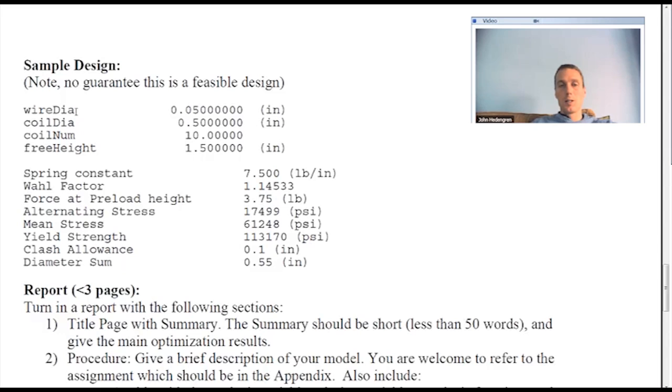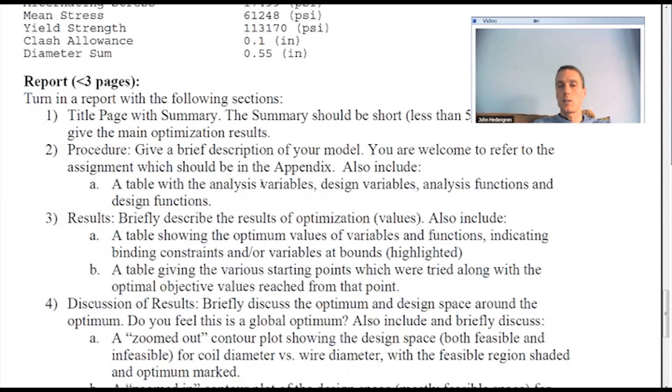So report - three pages, a little bit like the two bar one. Summary, procedure, give a table of all of your variables, your degrees of freedom. These analysis variables are like the parameters of your model, the things that are fixed that you really don't change. These are your degrees of freedom, the ones that you're going to vary to optimize the solution. Analysis functions are just the functions that you're calculating to determine the stresses. And then design functions are going to be those that are going to be using constraints and also then the objective function as well.